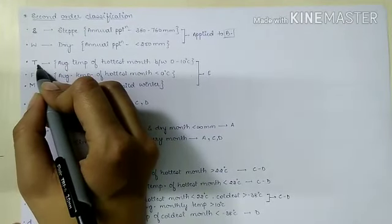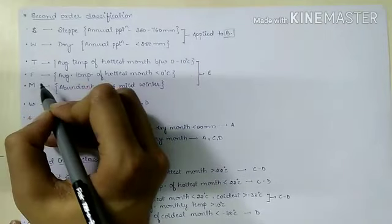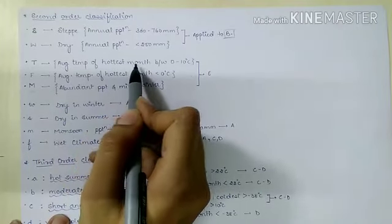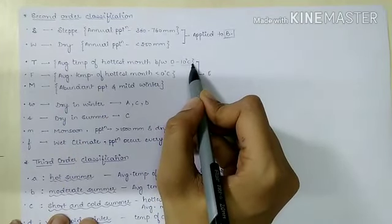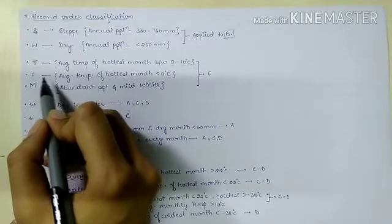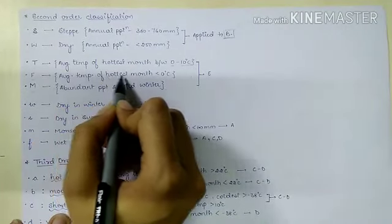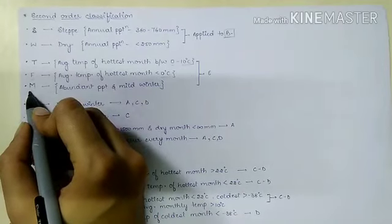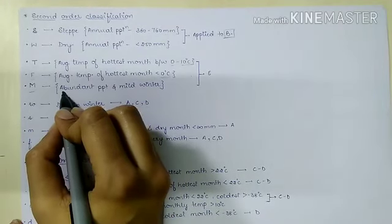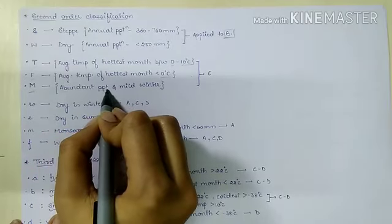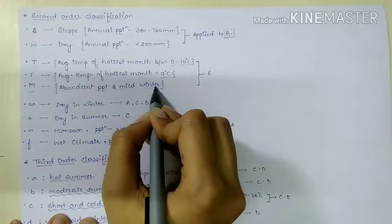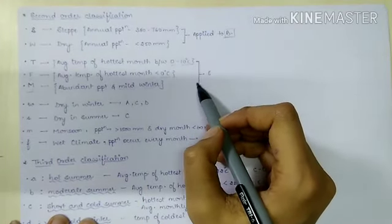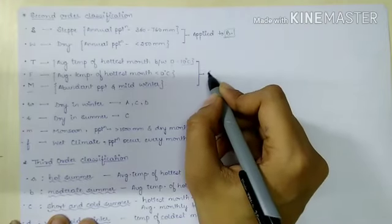Capital T represents areas where the average temperature of the hottest month is between 0 to 10 degrees Celsius. Capital F indicates the average temperature of the hottest month is below 0 degrees Celsius. Capital M states that this area has abundant precipitation and mild winters. These three categories — T, F, and M — are applied to E, that is polar climate.